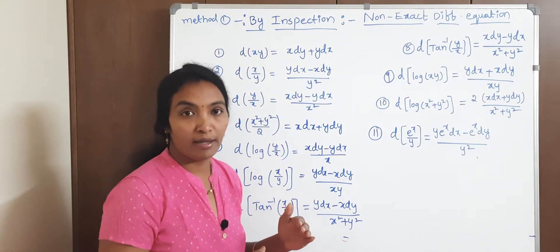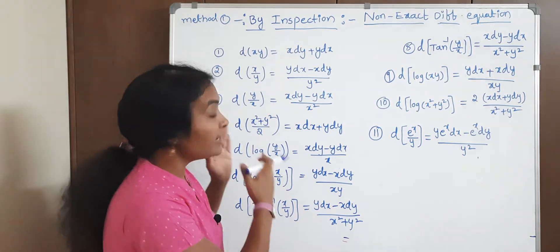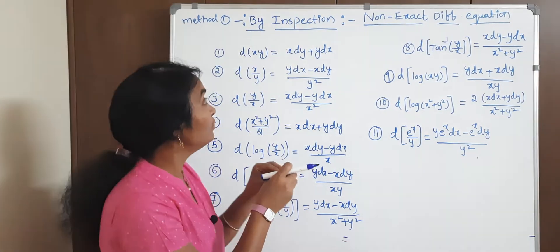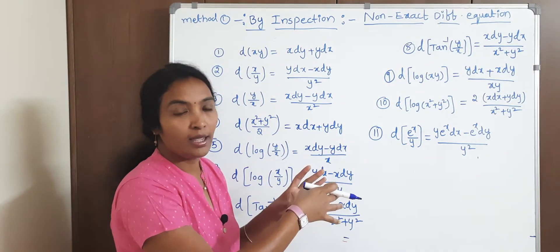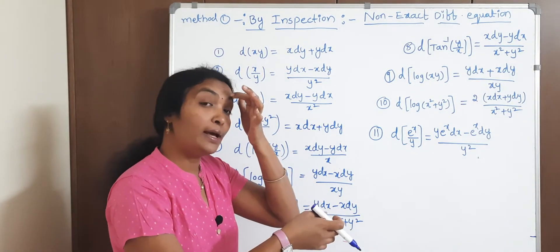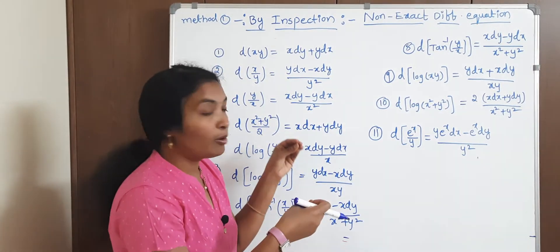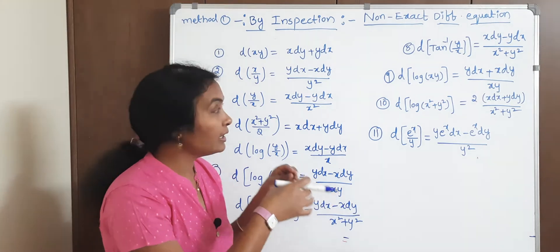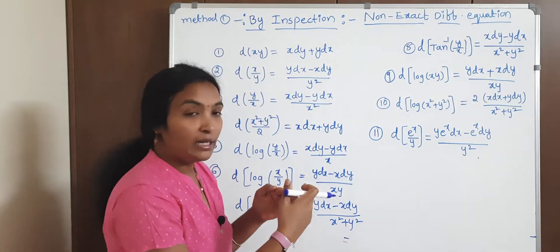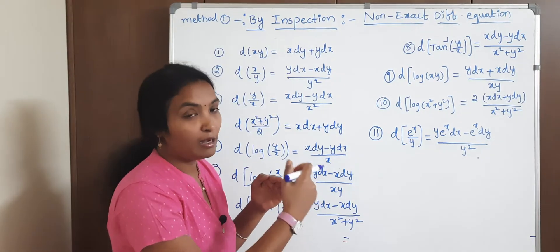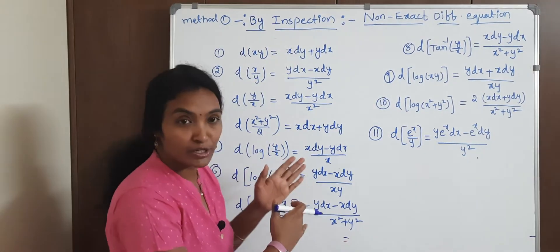Actually, we have five methods. The first method is the direct formula method — that is, by inspection method. By inspection means you have to inspect and substitute the formula directly. You don't need to apply the exact solution procedure. The other four methods involve finding integrating factors, which we'll cover in the next class.